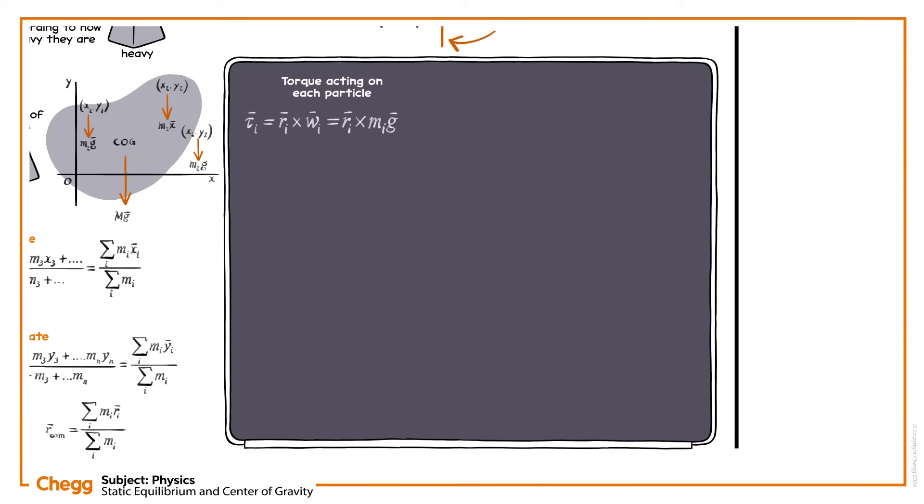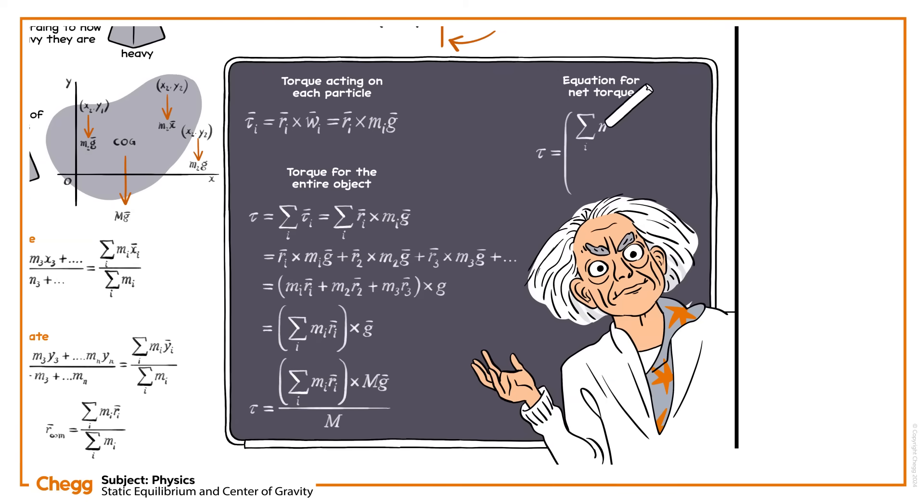That's only for one particle. Torque for the entire object, represented by the Greek letter tau, equals the sum of torque for each particle. The sum of vector ri times mi times vector g. The equation for net torque can be modified and simplified to this, where m is the object's total mass.